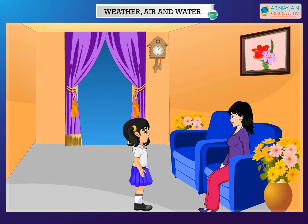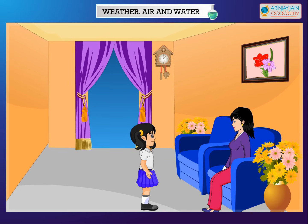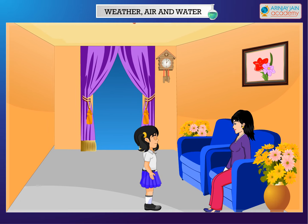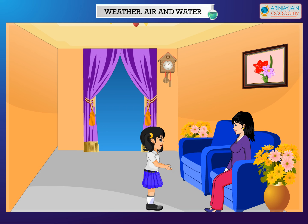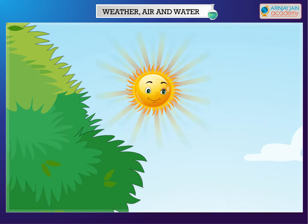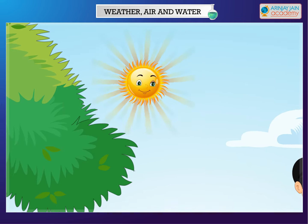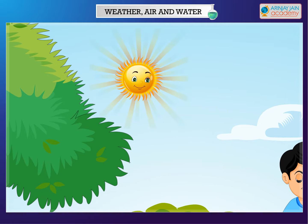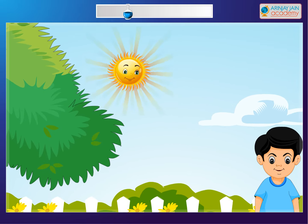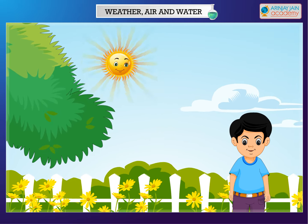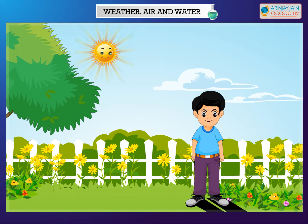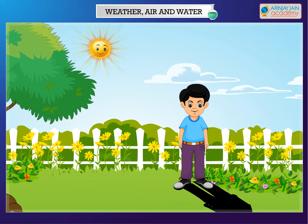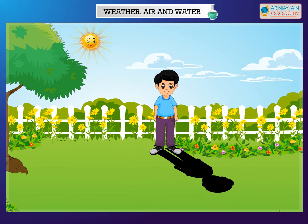Kids, do you know how the sun and weather are related to each other? How they affect one another? The sun causes the change in the weather conditions. The sun affects the temperature of the earth. When the sun shines overhead, sun rays fall directly on the earth, so it becomes very hot.